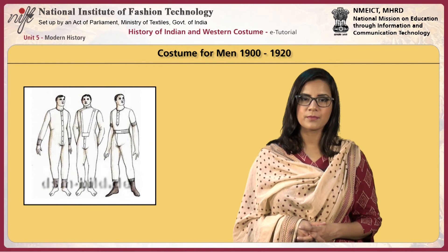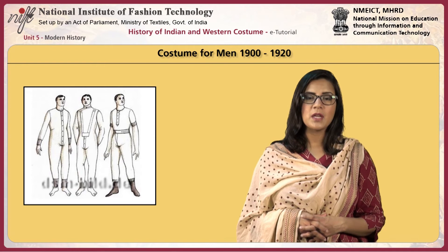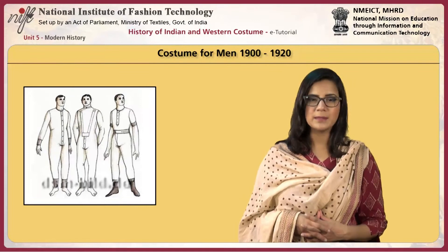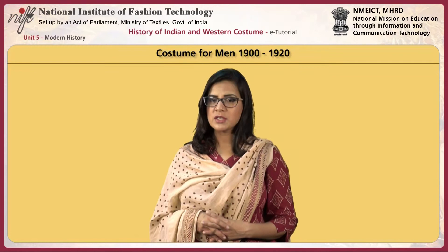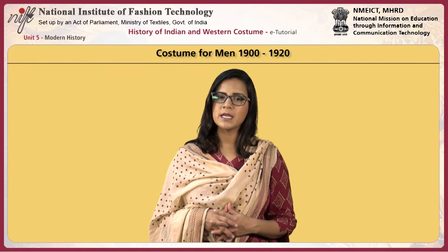Men's underwear was primarily made from wool and cotton. Union suits with drawers were popular. Suits consisting of jacket, vest, and trousers were worn with a shirt and necktie, and were appropriate dress wear for professional and business employees during the work week. Labouring men wore sturdy work clothes. For special occasions, all men wore suits. For informal social occasions like leisure or sports, men would wear a sports jacket, trousers, and shirts of various kinds. In the early years of the century, jackets and coats were cut long, buttoned high, and had small lapels.